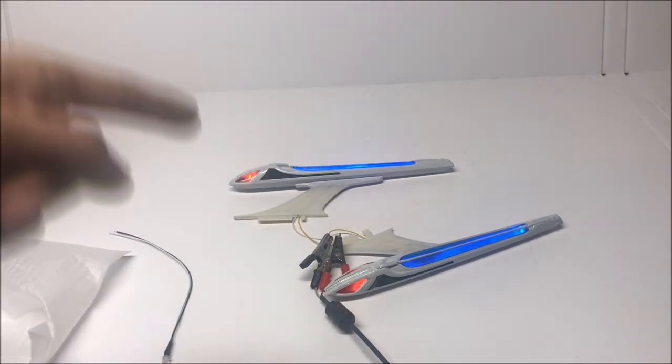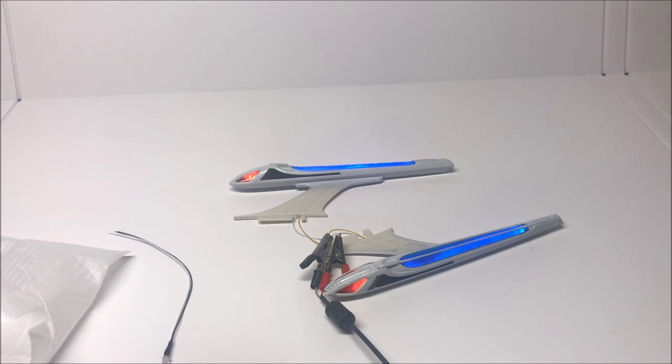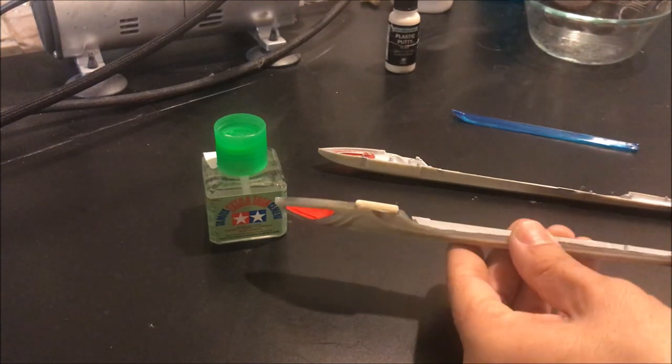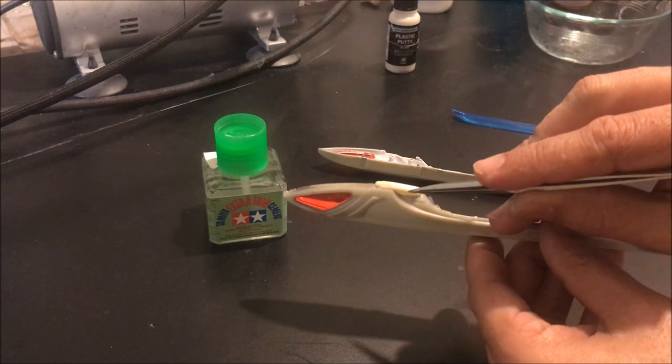So let's look at how we get from LED tape, LEDs, and some things like polyfill and packing material to get lit nacelles. Now the first thing we need to do is actually just build the nacelle before we put the lights in it.